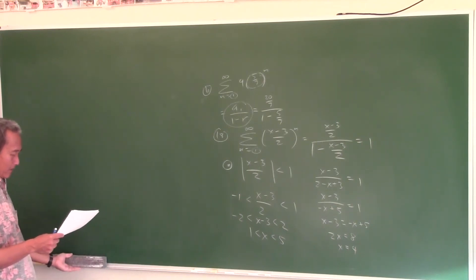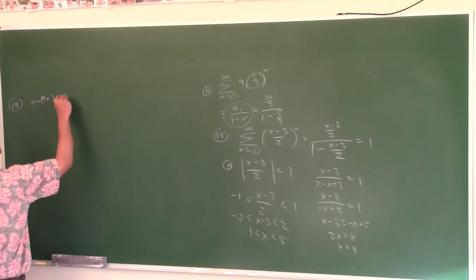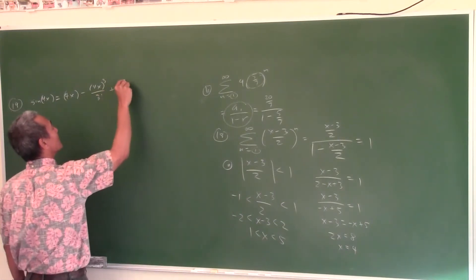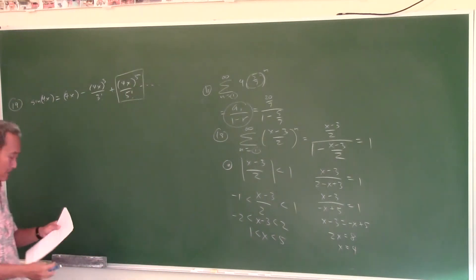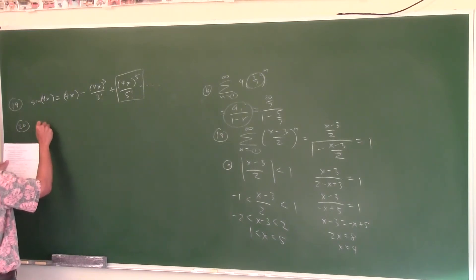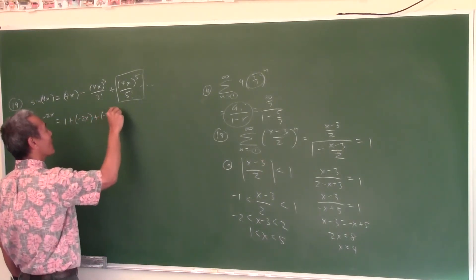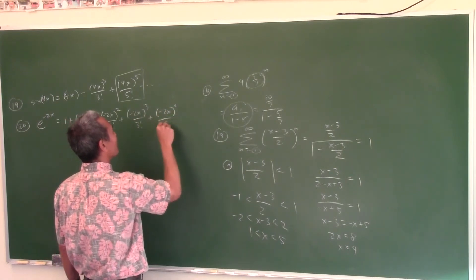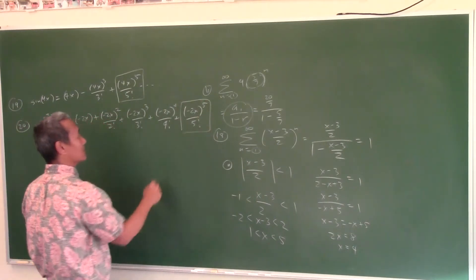For power series problems, you just need to know your series formulas. The power series for sine is: x minus x³ over 3! plus x⁵ over 5! and so forth. The third term is x⁵ over 5! — simplify that for your answer. For the sixth term of e^x: the series is 1 plus x plus x² over 2! plus x³ over 3! plus x⁴ over 4! plus x⁵ over 5!, so the sixth term is x⁵ over 5!. Simplify that.